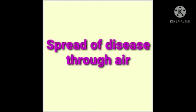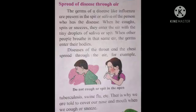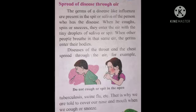First, let's see how the spread of disease comes through the air. The germs of a disease like influenza are present in the spit or saliva of the person who has the disease. When he coughs, spits, or sneezes, they enter the air with the tiny droplets of saliva or spit. When other people breathe in that same air, the germs enter their body.